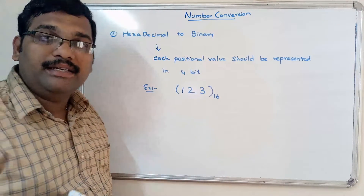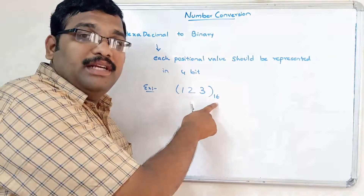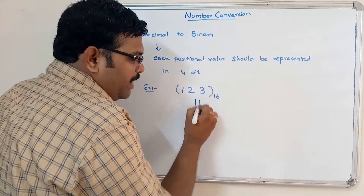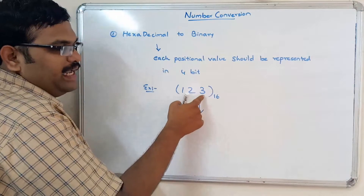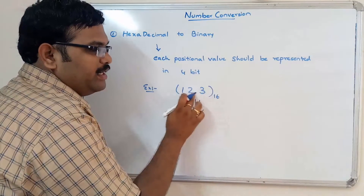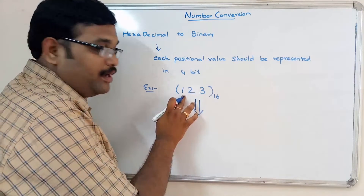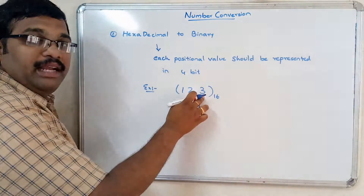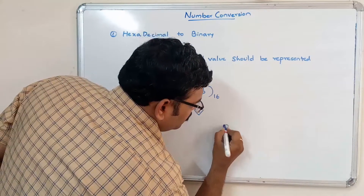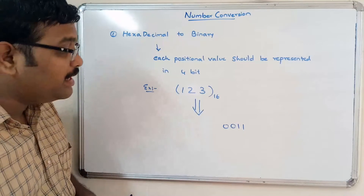Let us take the example 123 in hexadecimal — base 16. We have to convert this into the binary equivalent. Consider each and every positional value: the positions are units, tens, and hundreds — that is positions 1, 2, and 3. First we consider 3. The 4-bit representation of 3 is 0011.